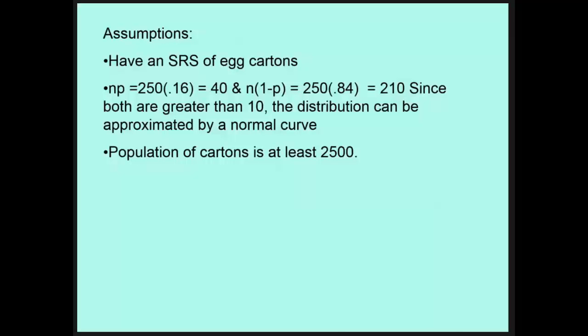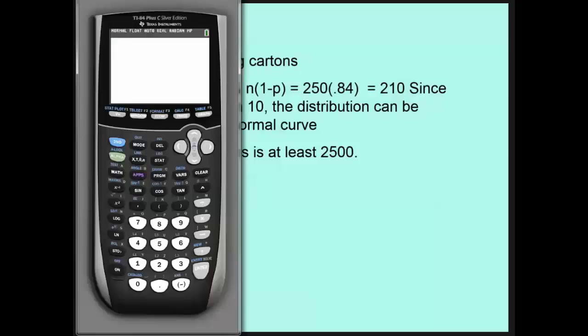Then we need to check np and n times one minus p. Here's a quick question, where did they get the .16? What they did is they took the 40 that had at least one broken egg and they divided that into the 250. So the p hat is .16 in this case.